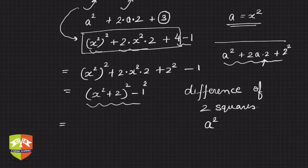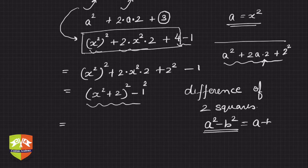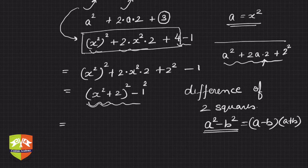I know what is difference of two squares. If a square minus b square is difference of two squares, it can be factored into (a minus b) times (a plus b). So let's use it, where this entire item is a and 1 is b.